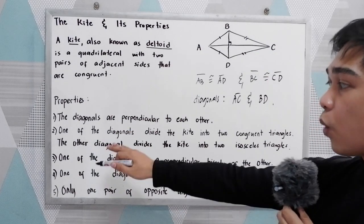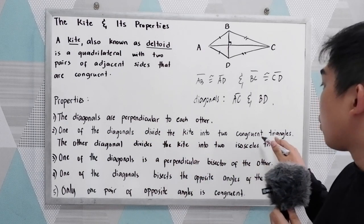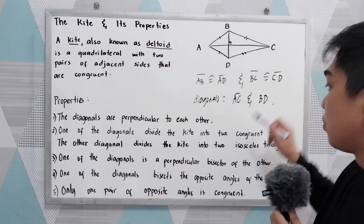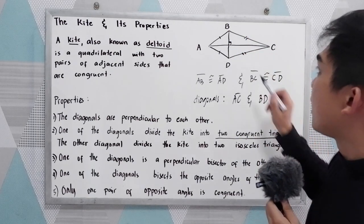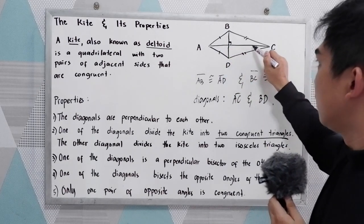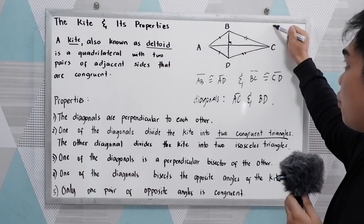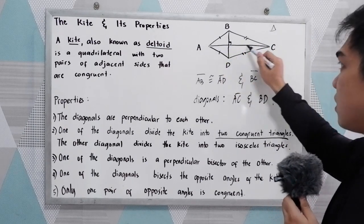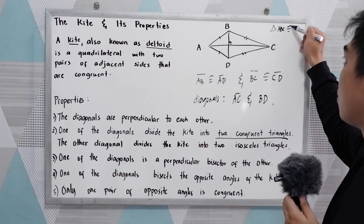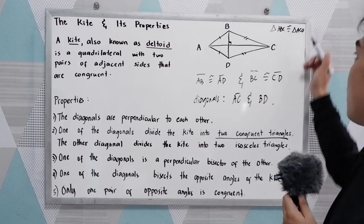Second, one of the diagonals divides the kite into two congruent triangles. Using diagonal AC, triangle ABC is congruent to triangle ADC.